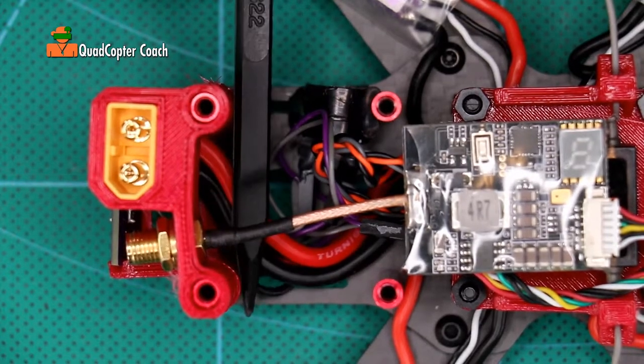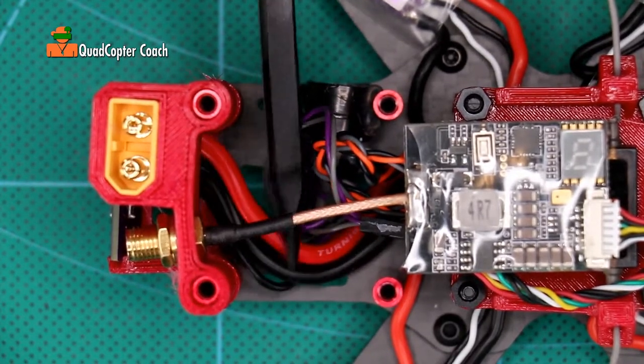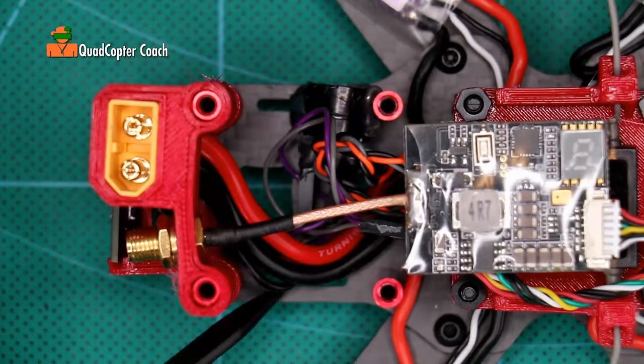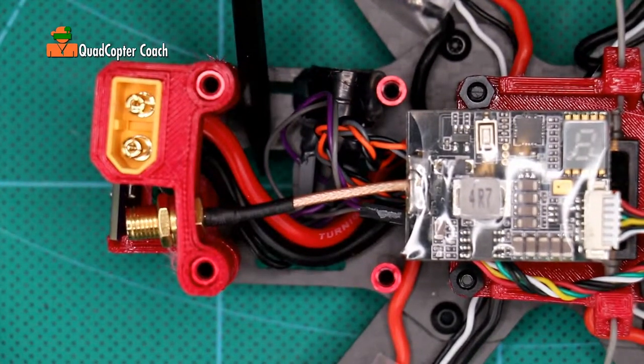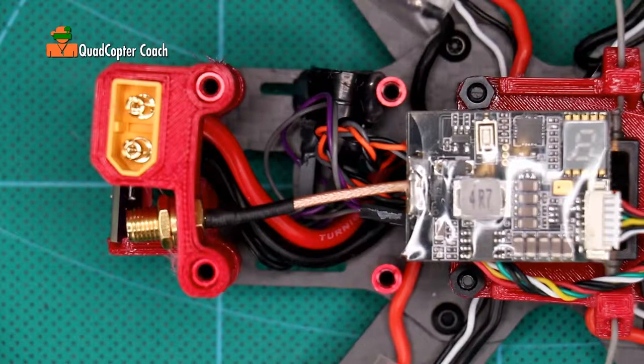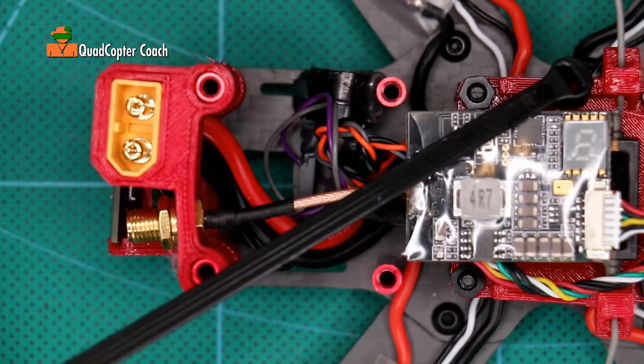These wires here for the LED and the power, we can just bind these together. Very simple - we have two holes here, one slit there, and a hole here, and we're going to run this tie through both of them and secure it.